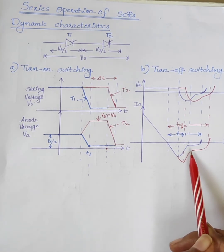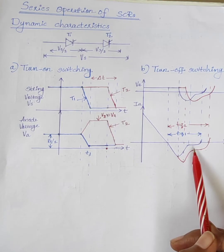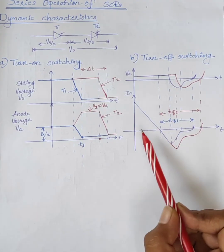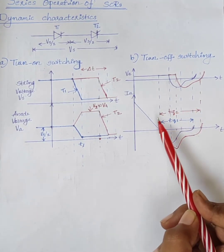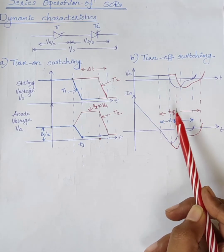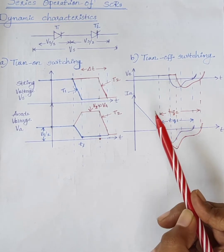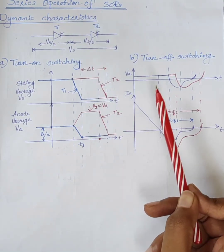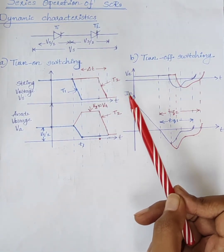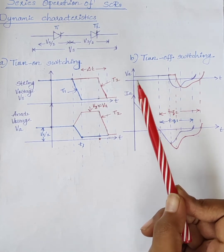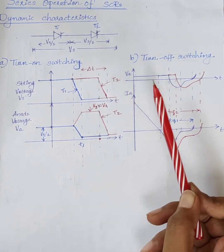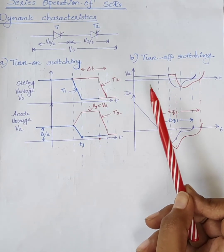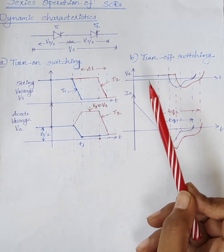The two SCRs have unequal voltage across them during the turn-off process. We can conclude that during turn-on and turn-off, the capacitance of the reverse biased junctions determines the voltage distribution across SCRs in a series connected string. As the reverse biased junctions have different capacitances, the voltage distribution during turn-on and turn-off periods would be unequal.